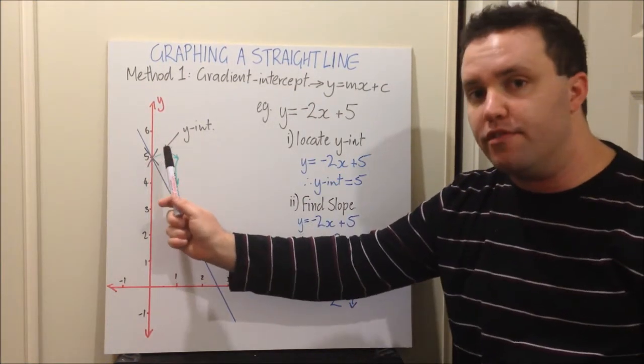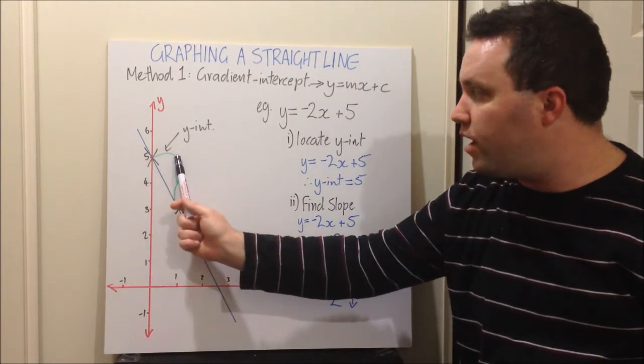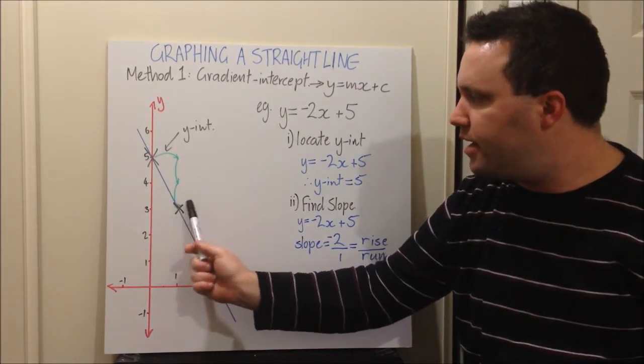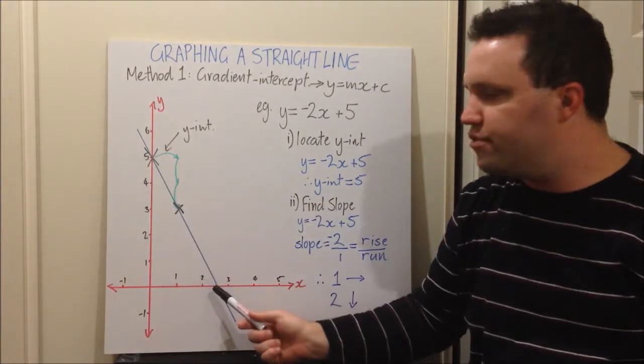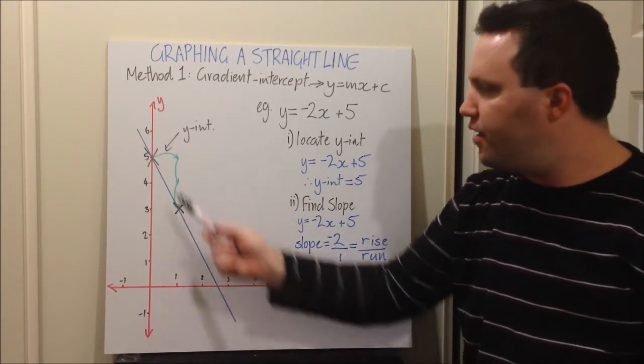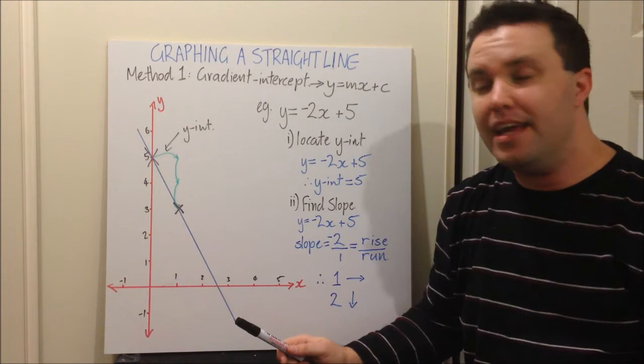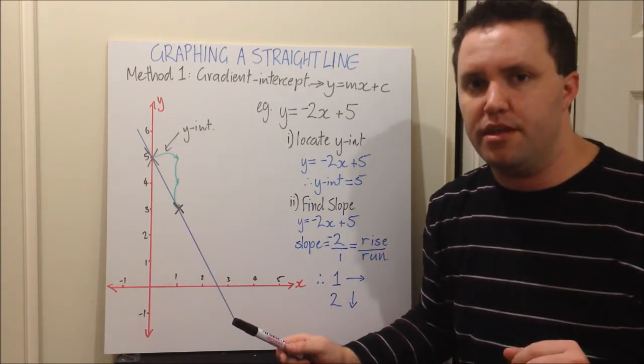Let's come over here. Here was my y intercept of 5. I come across 1, I go down 2, mark my next point. I have 2 points, I can draw a line. I draw it straight through. So that's method 1, called the gradient intercept method.